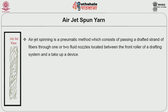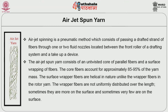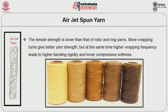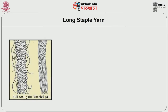The next yarn type is airjet spun yarn. Airjet spinning is a pneumatic method which consists of passing a drafted strand of fibers through one or two fluid nozzles located between the front roller of a drafting system and a take-up device. The airjet spun yarn consists of an untwisted core of parallel fibers and a surface wrapping of fibers. The core fibers account for approximately 85 to 90 percent of the yarn mass. The surface wrapper fibers are helical in nature, unlike the wrapper fibers in rotor yarn, and are not uniformly distributed over the length. The tensile strength is lower than that of rotor and ring yarns. More wrapping turns give better yarn strength, but higher wrapping frequency leads to higher bending rigidity and lower compressive softness.